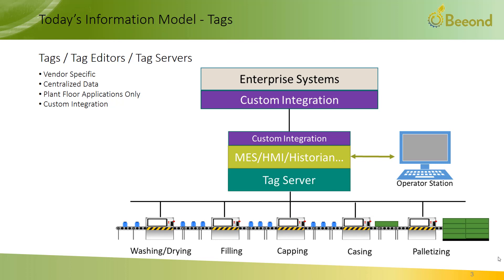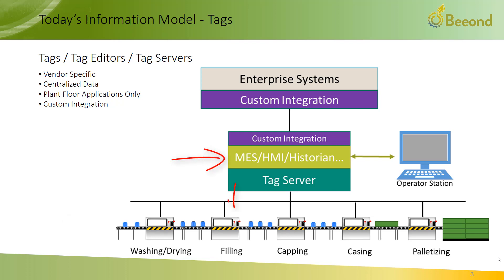Architecturally, tag servers live on a centralized hardware platform and pull, retrieve, and store the data for the controllers they are connected to. The server provides data updates to the vendors' HMI, MES, and Historian systems, and provides services to write commands and data back to the controllers.